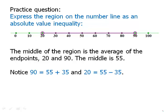And from 55, we can go a distance of 35 in both directions. Notice also that the endpoints are not included. So we can go, we cannot go as far as 35. We have to go a distance that is less than 35.